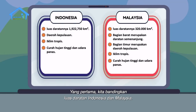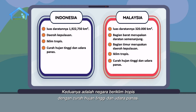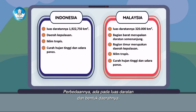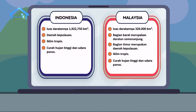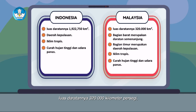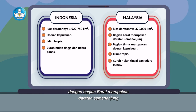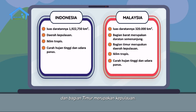Yang pertama, kita bandingkan luas daratan Indonesia dan Malaysia. Keduanya adalah negara beriklim tropis dengan curah hujan tinggi dan udara panas. Perbedaannya ada pada luas daratan dan bentuk daerahnya. Indonesia luas daratannya 1.922.750 km persegi dengan daerah kepulauan. Sedangkan Malaysia, luas daratannya 320.000 km persegi, dengan bagian barat merupakan daratan semenanjung dan bagian timur merupakan kepulauan.